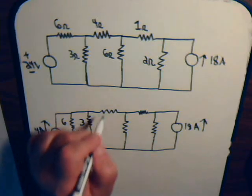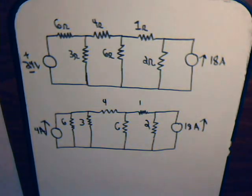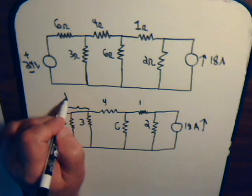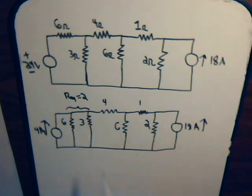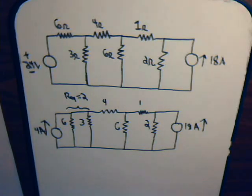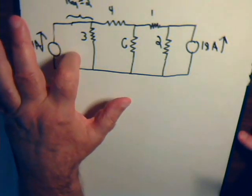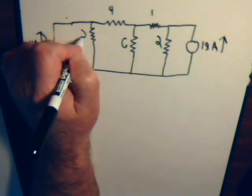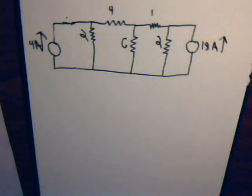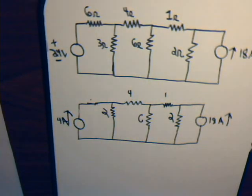This is 6 ohms and 3 ohms. So now the circuit has a current source at each end, and the 6 ohm and 3 ohm resistors are in parallel. The equivalent resistance is 2 ohms: 6 times 3 is 18, divided by 6 plus 3 is 9, and 18 divided by 9 is 2. So we can redraw the circuit — this will now be 2 ohms.